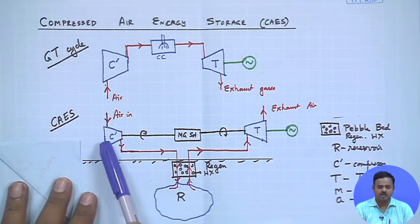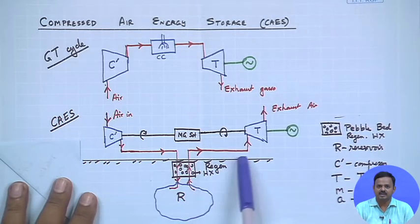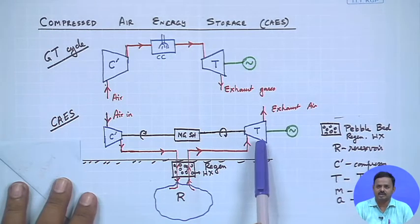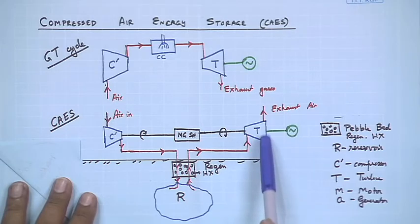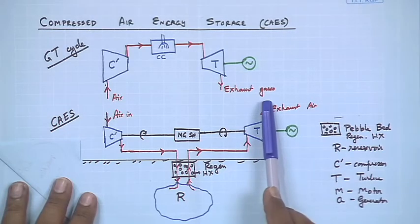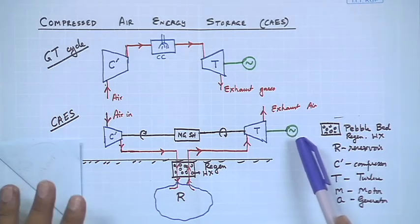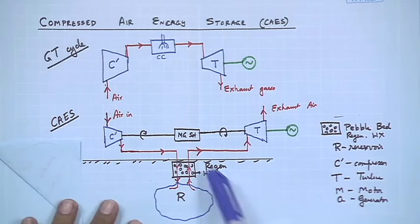This compression occurs during off-peak hours when we have excess energy, so we use that extra energy to run the compressor. During peak hours, when we need the energy back, the compressed air is fed to a gas turbine — an air turbine — where it is expanded, its pressure comes down, and the exhaust air exits the turbine.